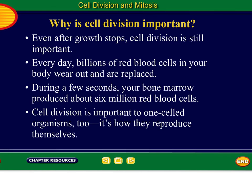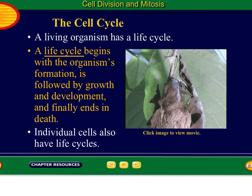Even after growth stops, cell division is still important. Every day, billions of red blood cells in your body wear out and are replaced — your blood gets renewed all the time. During a few seconds, your bone marrow produces about 6 million red blood cells. So new blood is produced inside your bones. And cell division is important to one-celled organisms too because that's how they reproduce themselves.